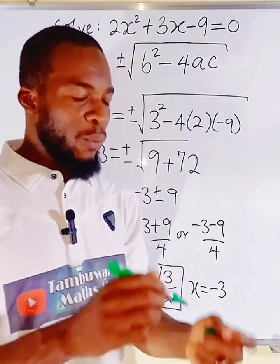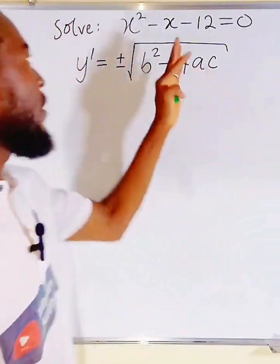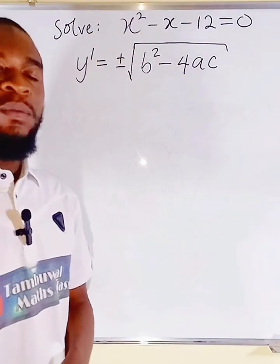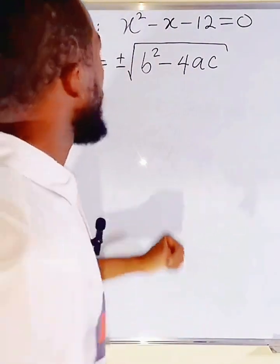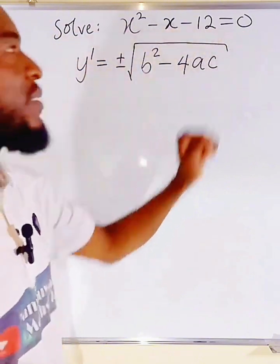Let us try it on another equation. Alright, here is another equation. x squared minus x minus 12 equal to 0. We are going to start with y prime, which is the derivative of the function to the left-hand side.